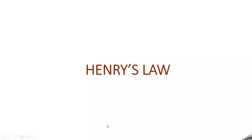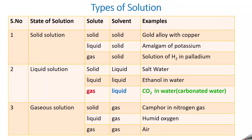Let us discuss Henry's law in this video. There are 9 types of solution. All these types of solution were discussed in the first video of the solution chapter, in which the gaseous solute — a gas in solute form — is dissolved in a liquid taken as a solvent. This is a very important type of solution for learning Henry's law.